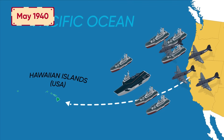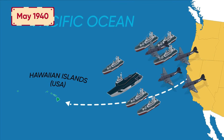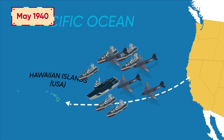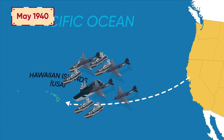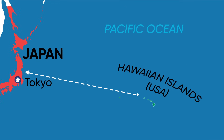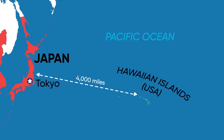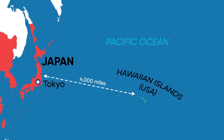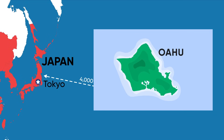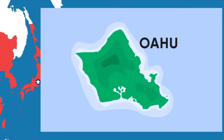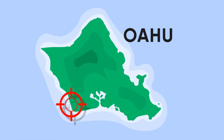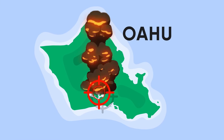In addition to nearly 100 naval vessels, including 8 battleships, there were substantial military and air forces. Located approximately 4,000 miles from the Japan mainland, Pearl Harbor was not expected to be Japan's first target in Hawaii, and thus was left relatively undefended, making it an irresistibly easy target to the Japanese.